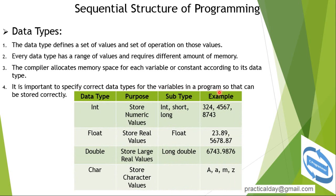Here are some examples of data types: integer, float, double, and char. Integer data type stores numeric values such as 324, 4567, and 8743. These are examples of numeric integer values.